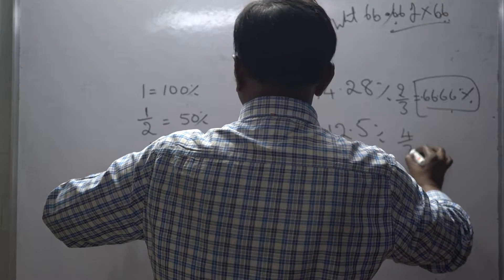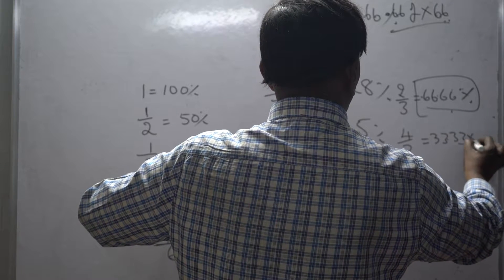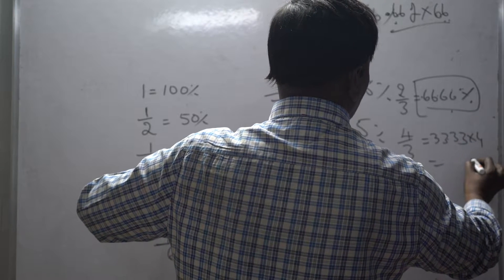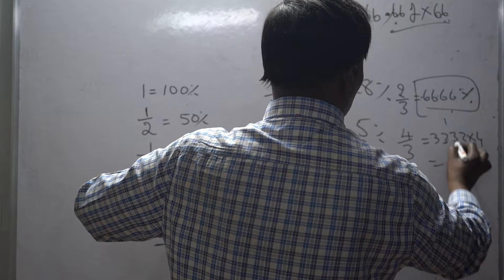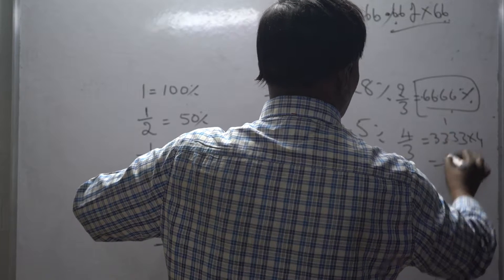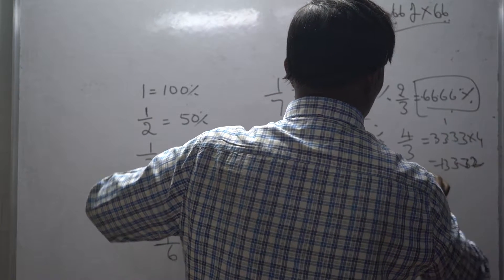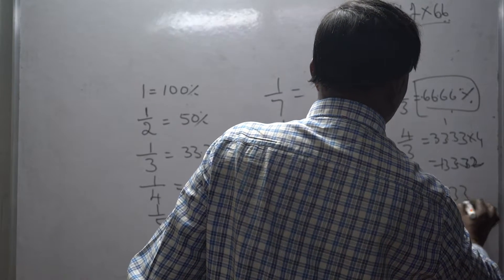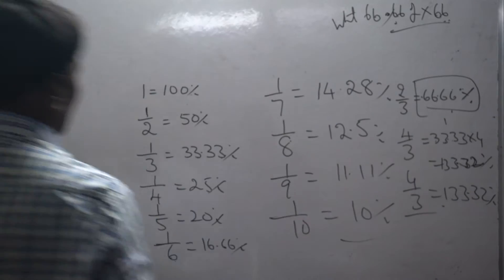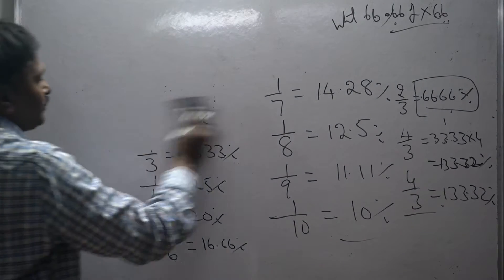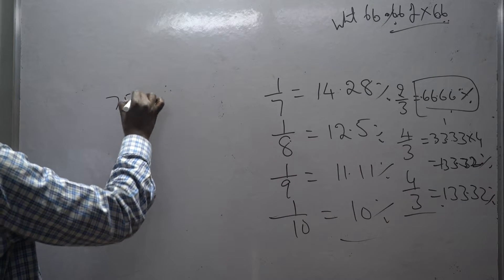4 by 3 is equal to how much? That is 33.33 multiplied by 4 — 4 times 33.33 gives 133.32. So 4 by 3 is equal to 133.33 percentage. You should remember this value.